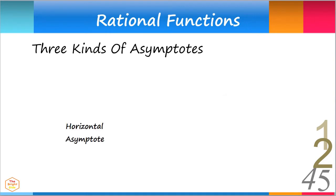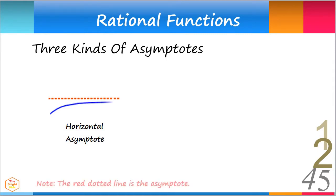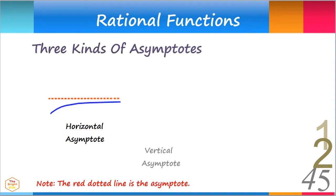Horizontal asymptotes are horizontal lines that the graph of the function approaches as x tends to infinity. These asymptotes run parallel to the x-axis; the curve runs closer and closer to this horizontal line but will never intersect nor touch it. Vertical asymptotes are vertical lines near which the function grows without bound, running parallel to the y-axis, with the curve never intersecting nor touching it.